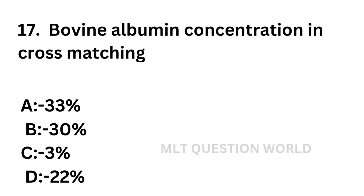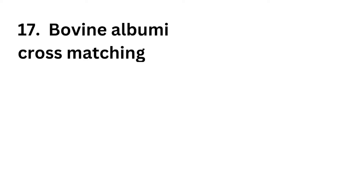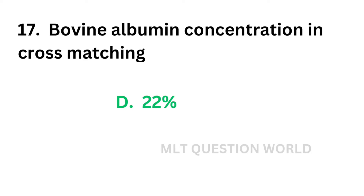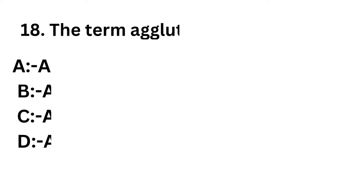Question number 17: Bovine albumin concentration in cross matching — option A: 33%, option B: 30%, option C: 3%, option D: 22%. Bovine albumin is added in the tube method of cross matching; it helps to form a layer between the cells and the serum, and the concentration used is 22%.